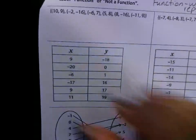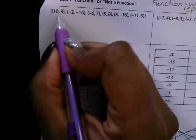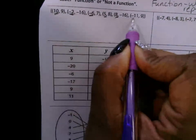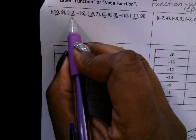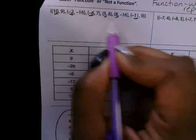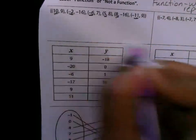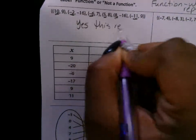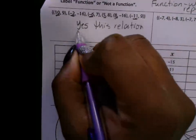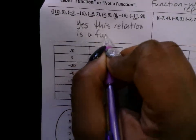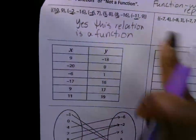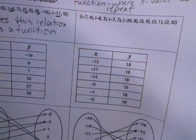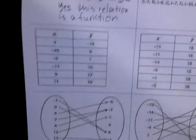Let's look at this relation, which is a set of ordered pairs. We're going to underline just the x values — just the domain values — to see if they're all different. We got 10, negative 2, negative 6, positive 5, positive 8, negative 11. They're all different, so yes, this relation is a function because all the x values are different. You're going to do the same thing on the next one — if none of them repeat, then yes, it's a function.